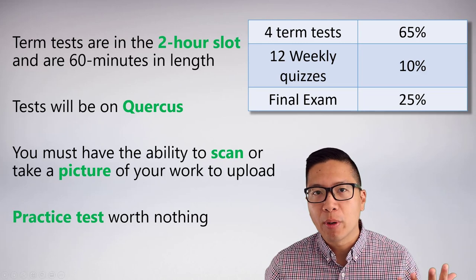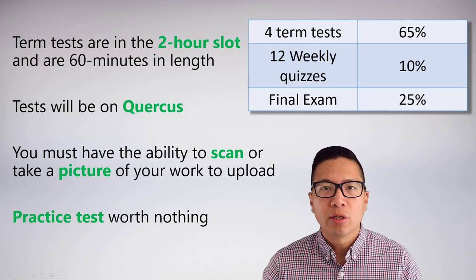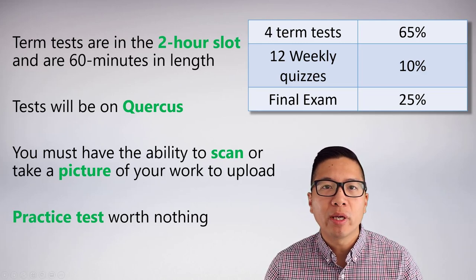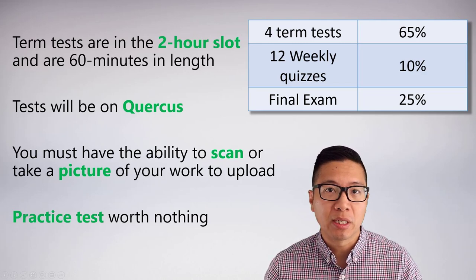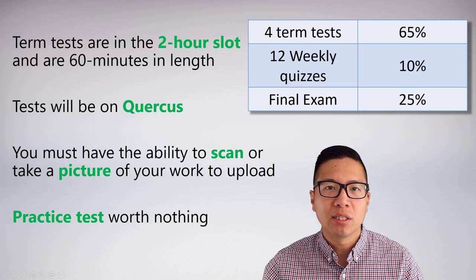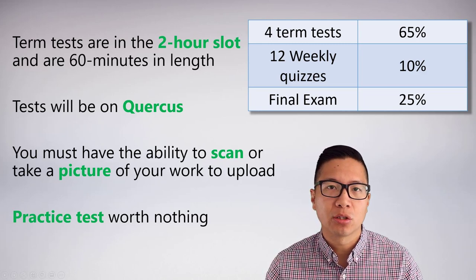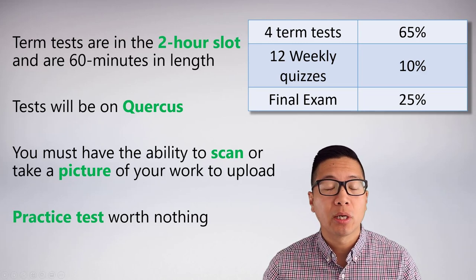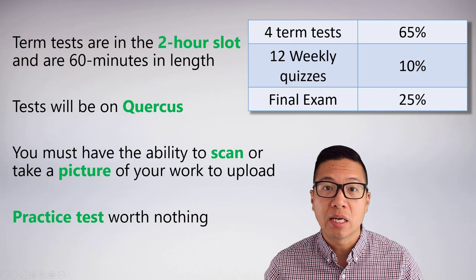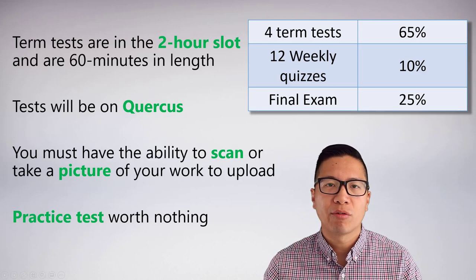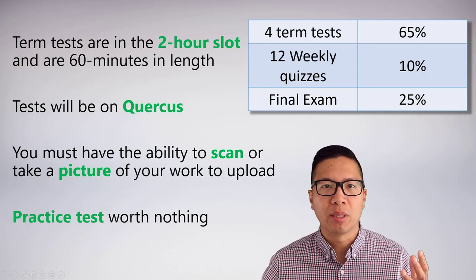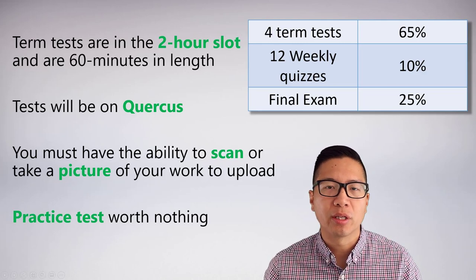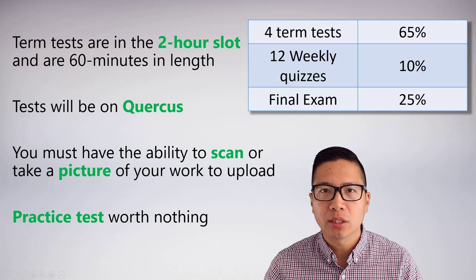The testing and evaluations in the course are as follows. There's going to be four term tests, as well as a final exam in the exam period, and a weekly quiz starting pretty much immediately, but you'll be able to see the deadlines and the due dates for all these things on Quercus. The term tests themselves are in the two-hour time slot that is assigned for the course, but they're not actually going to take up the full two hours. We just have a two-hour time slot to allow for people who might be experiencing some technical difficulties so that they can get the test done in the time. And tests will be done through Quercus.